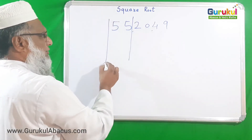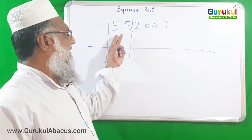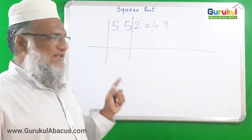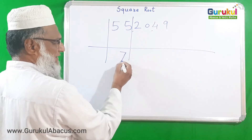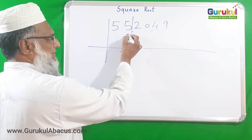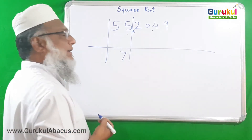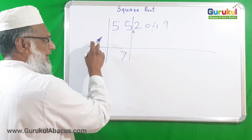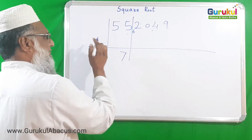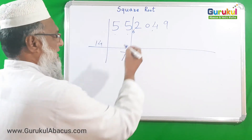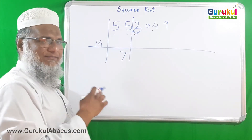Which perfect square is nearest to 55 but smaller than 55? That is 49, because 7 × 7 = 49. So I write 7 as the first answer digit. Subtracting 49 from 55 leaves 6 as the remainder, which I carry forward. Doubling the first digit: 7 × 2 = 14, written as the divisor. Now we have 62 with divisor 14.